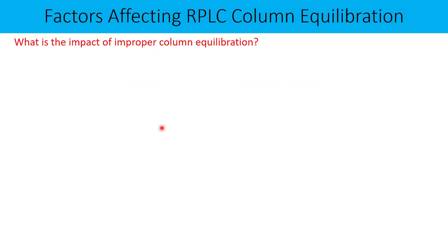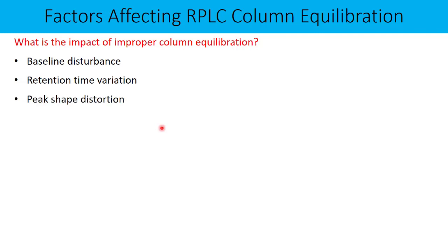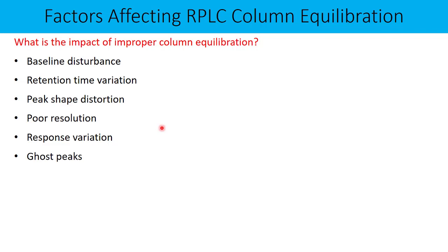Now, what is the impact of improper column equilibration? Baseline disturbance, retention time variation, and peak shape distortion can all result from improper column equilibration. Your resolution may be poor, and your response can also vary. In addition, your pressure gets fluctuated, and you may also end up getting ghost peaks or spikes in the chromatographic run.